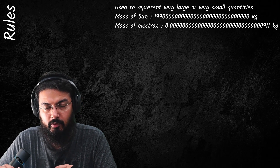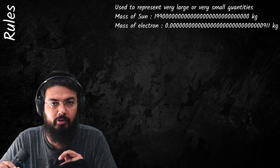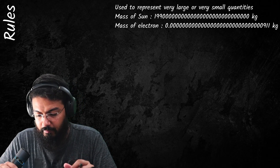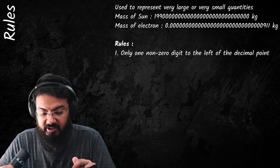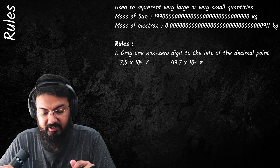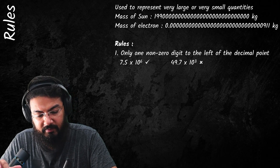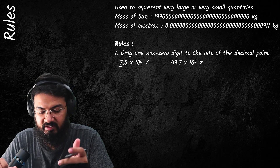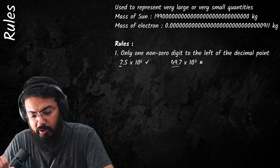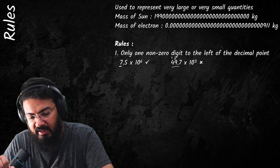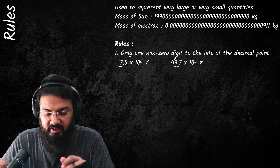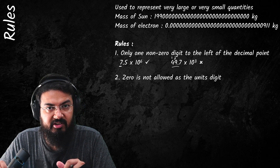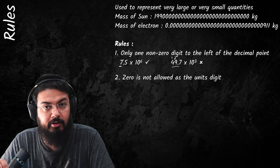Scientists use standard form or powers of 10 to write these values more conveniently. Let's discuss the rules first. The first rule is that only one non-zero digit is allowed to the left of the decimal place. For example, 7.5 is fine — you only have the 7 to the left of the decimal place — while 49.7 is wrong because you have two non-zero digits to the left of the decimal place.